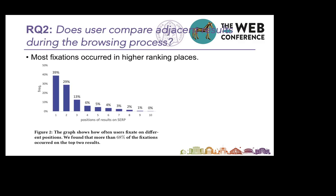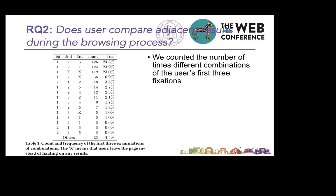For research question 2, does a user compare adjacent results during the browsing process? We investigated the fixation times of users in different positions, and the results are shown in the figure. Most fixations are concentrated in high-ranking positions. Next, we investigated the position of the first three examinations after the SERP is displayed, and counted the number of times different combinations of the user's first three positions occurred. Outside of sequential examination, the frequency of combinations 1, 2, 1 and 2, 1, 2 is very high. This shows that users often compare results in the top two positions. Therefore, the answer to research question 2 is also yes.